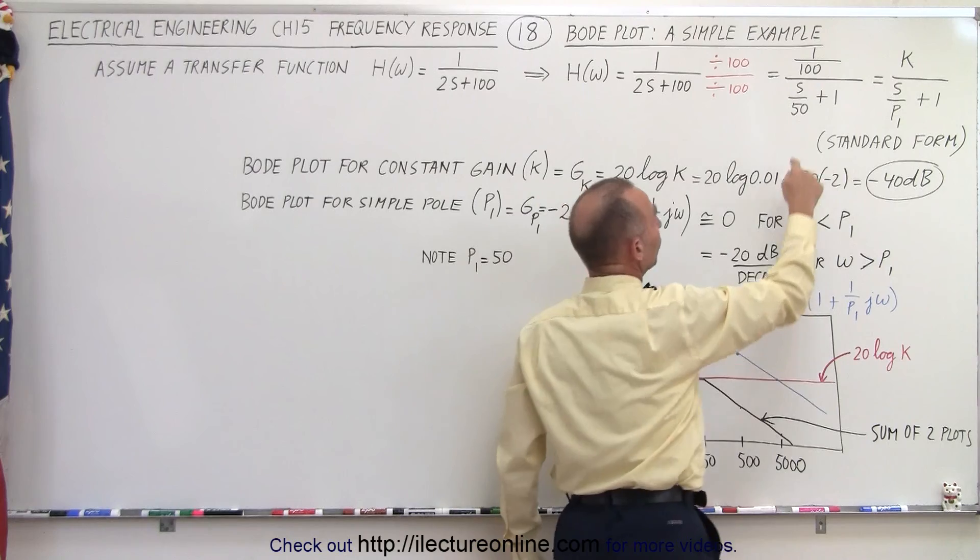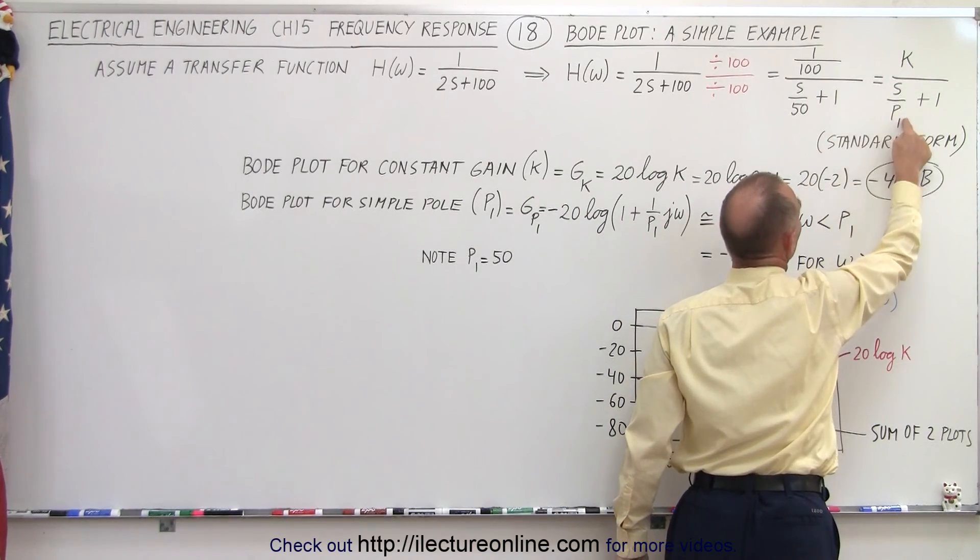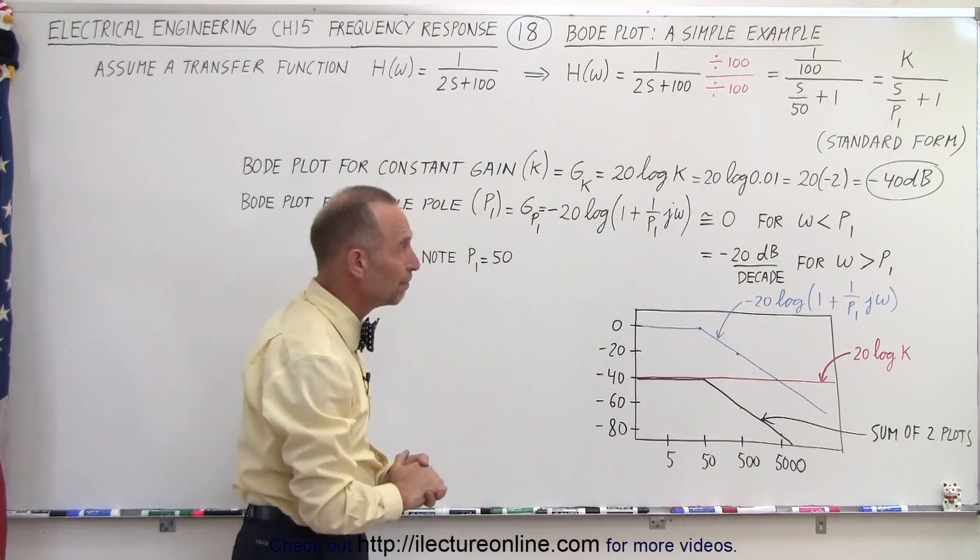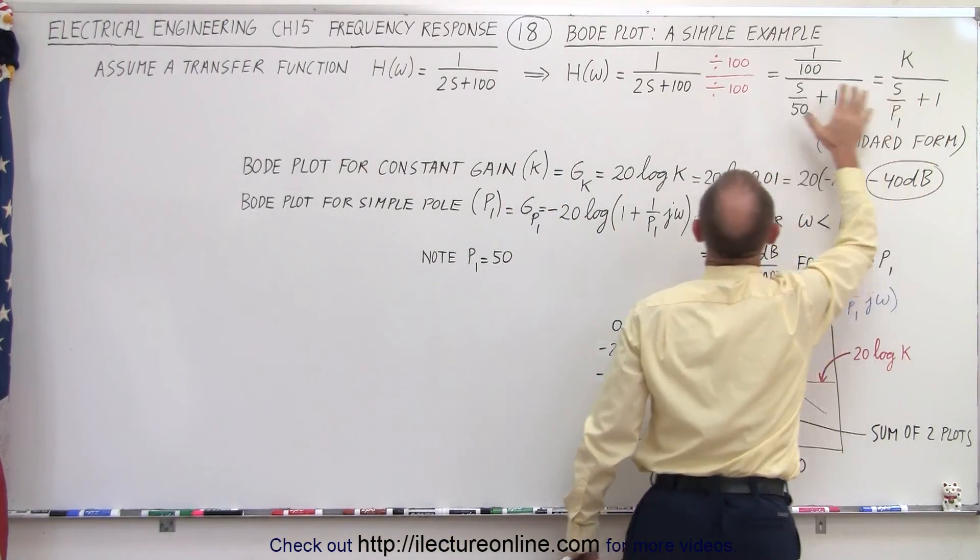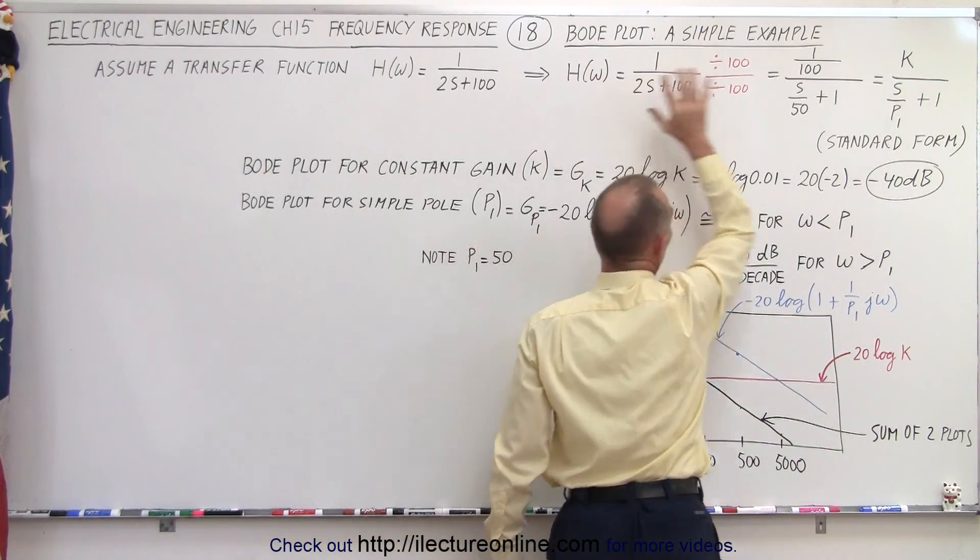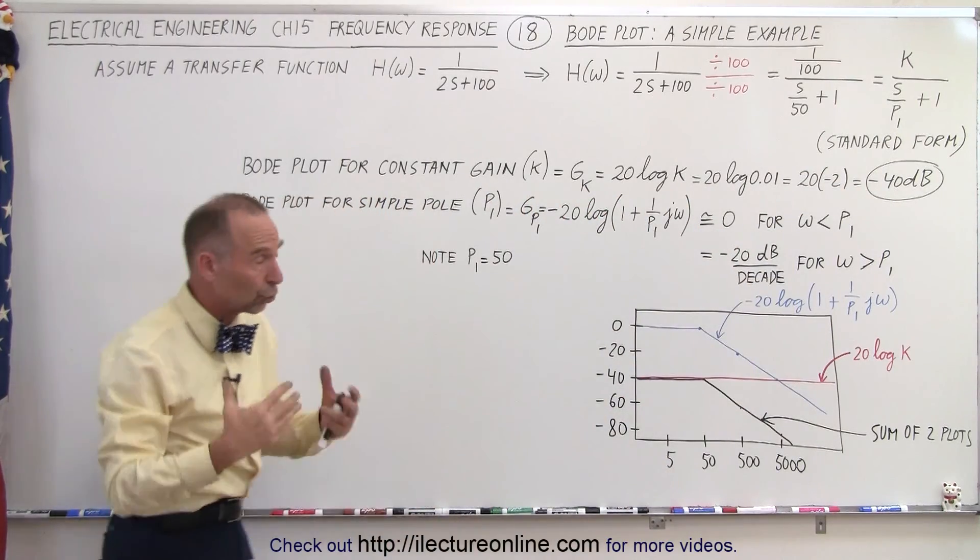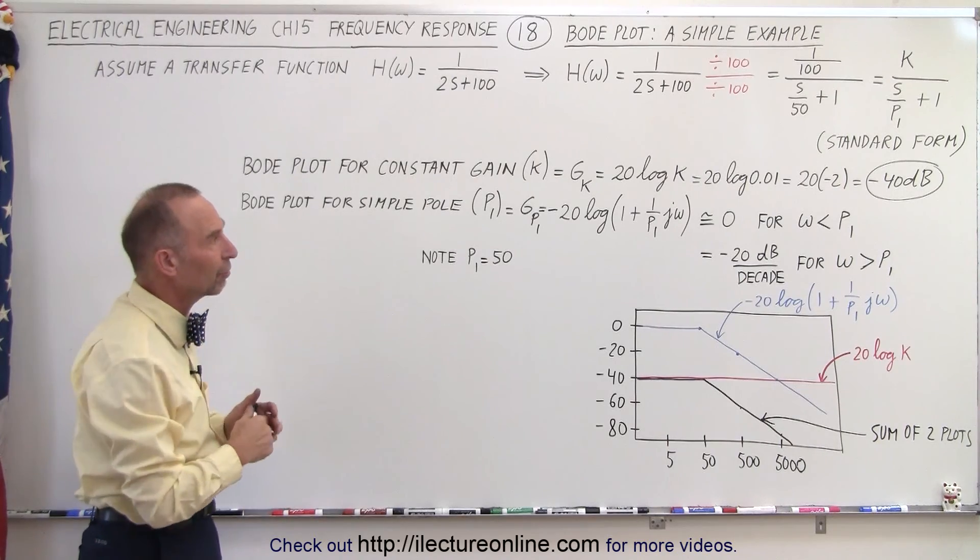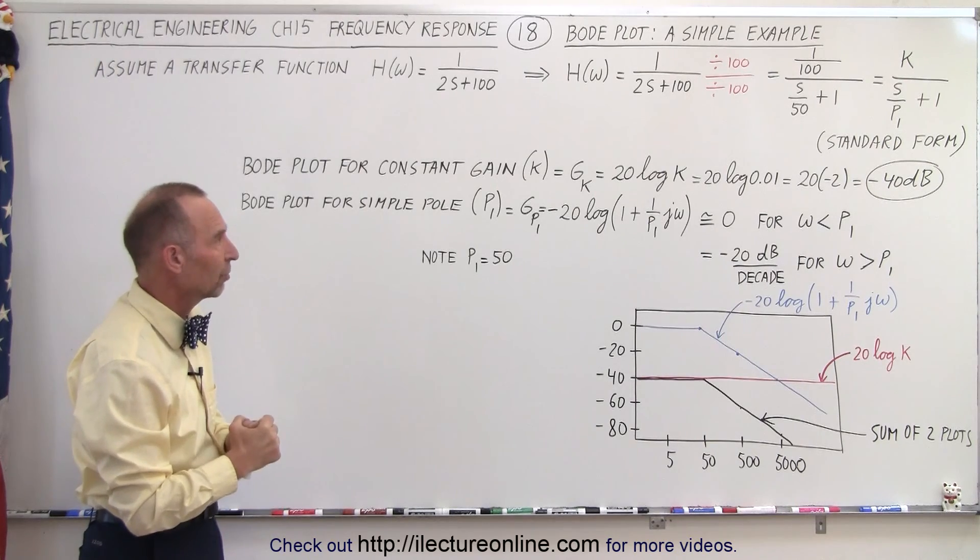Notice the number at the top 1 over 100 is the constant and the number down here is the pole. Now in this case there's only one pole so we'll call it P sub 1. Notice that this is the standard format that we transferred the transfer function to in order to be able to draw the Bode plot. Then later on we'll show you more about what that standard form is and how to attain that standard form. At this point just accept it that that's the standard form for making Bode plots.